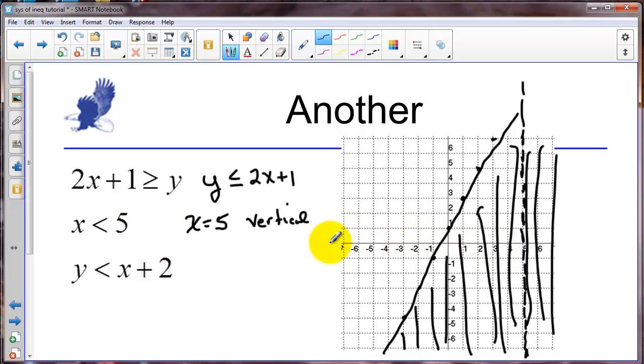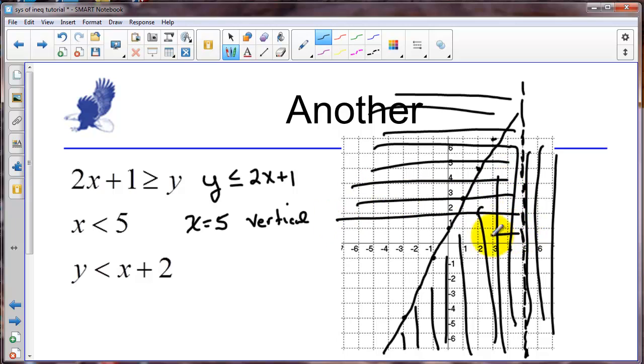And we are less than that. Values of x that are less than 5 are over here. So we're going to the left. So let's do that with a horizontal shade.